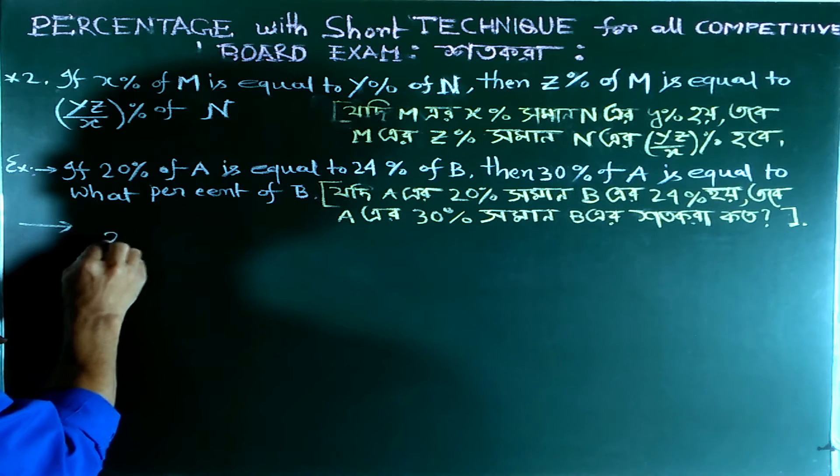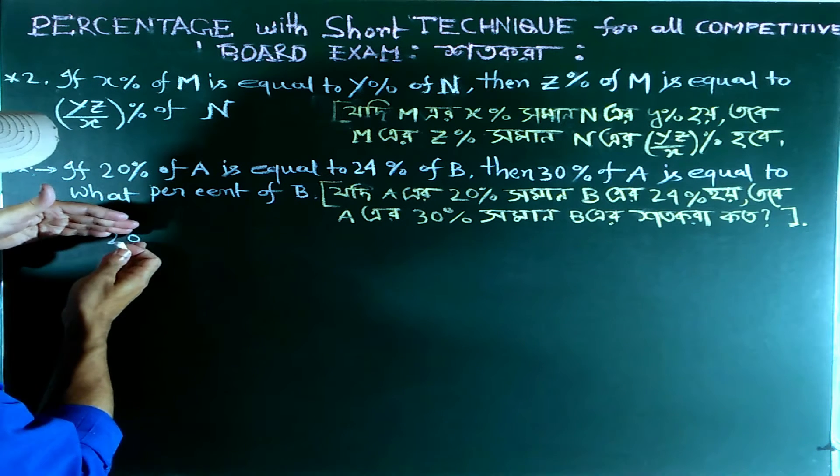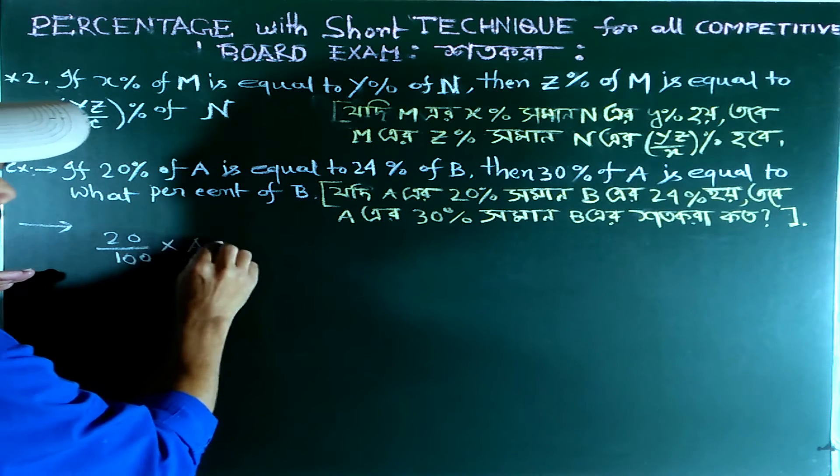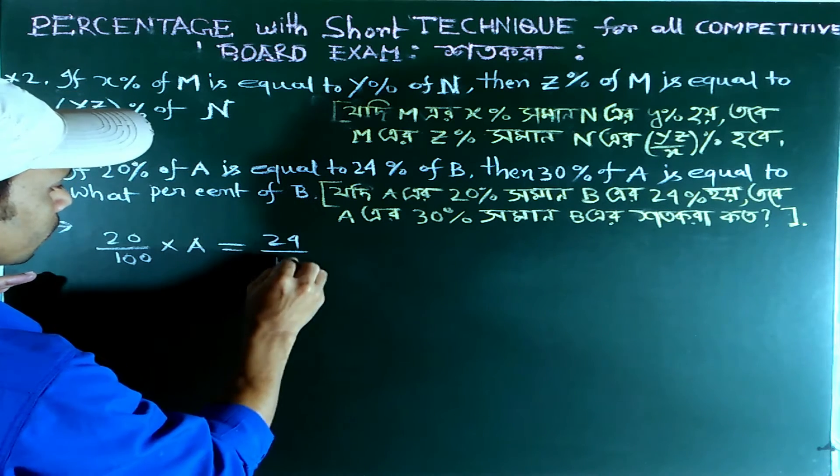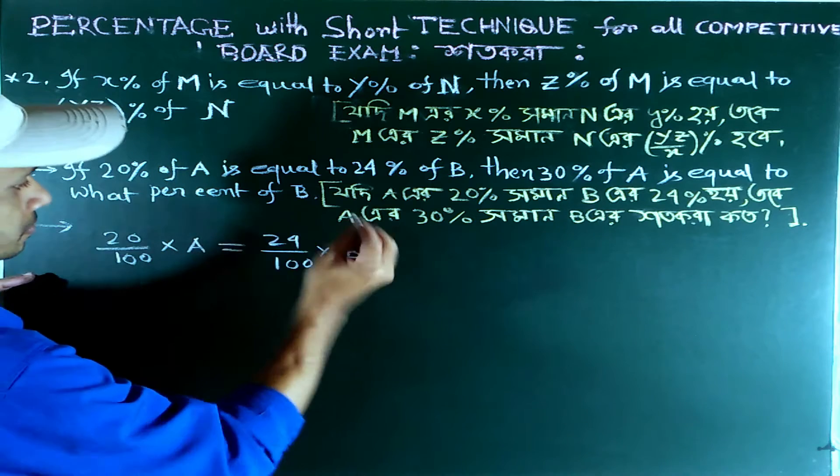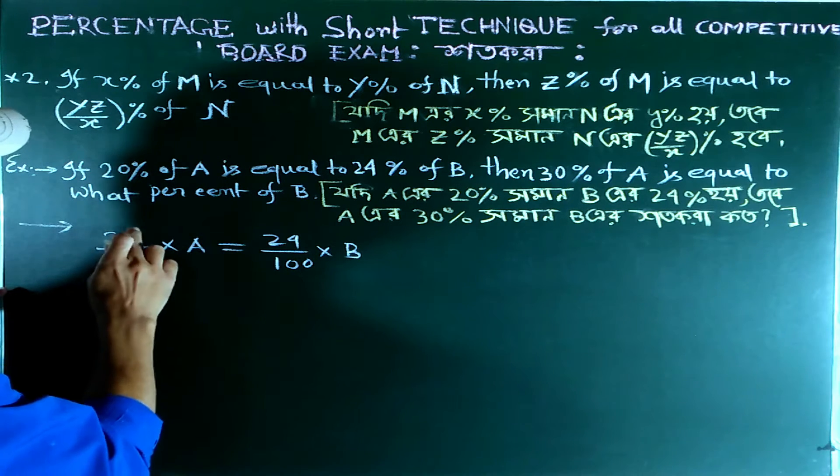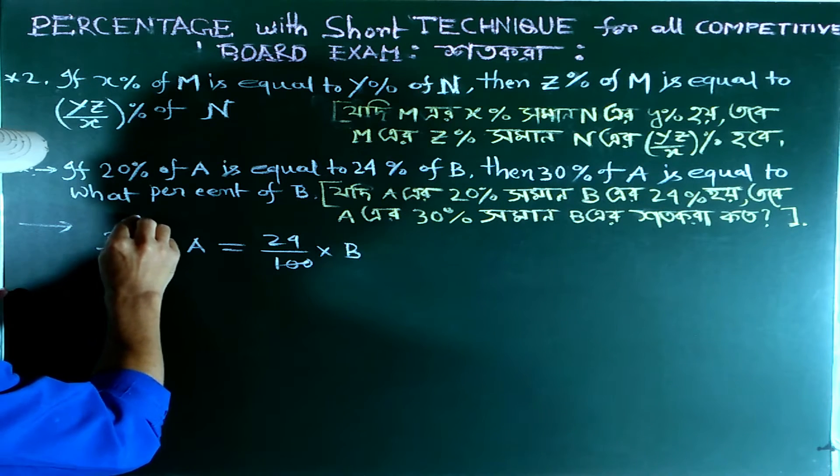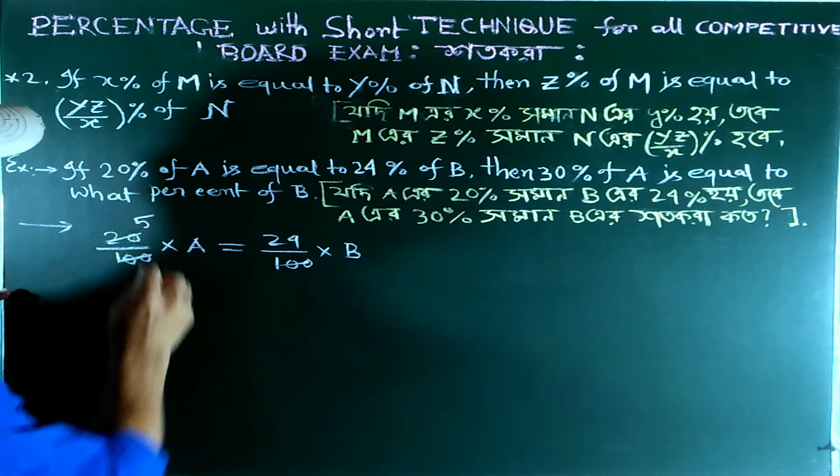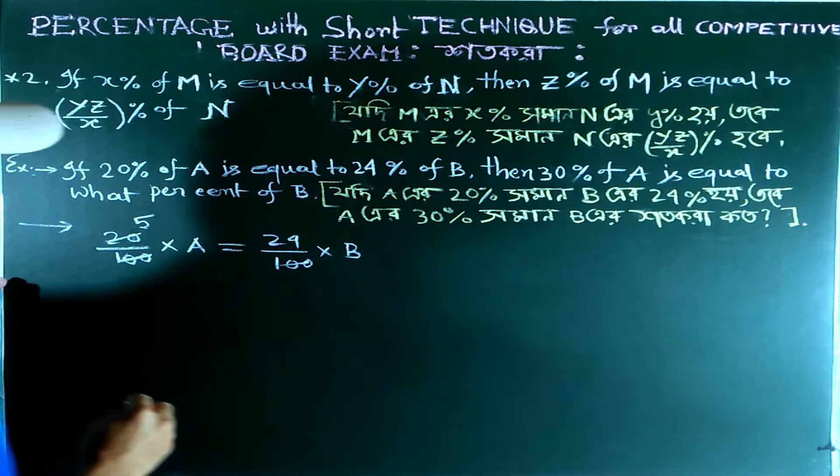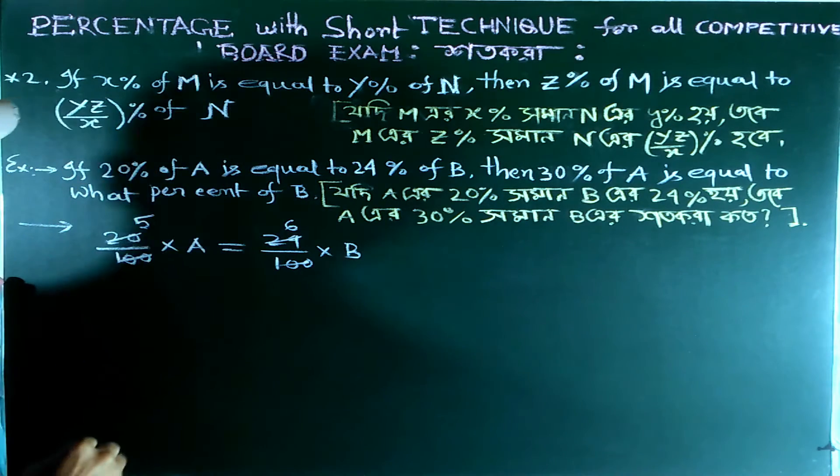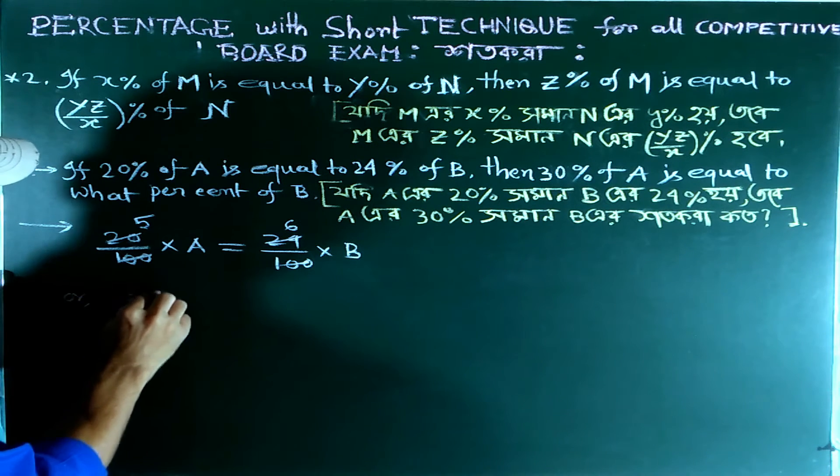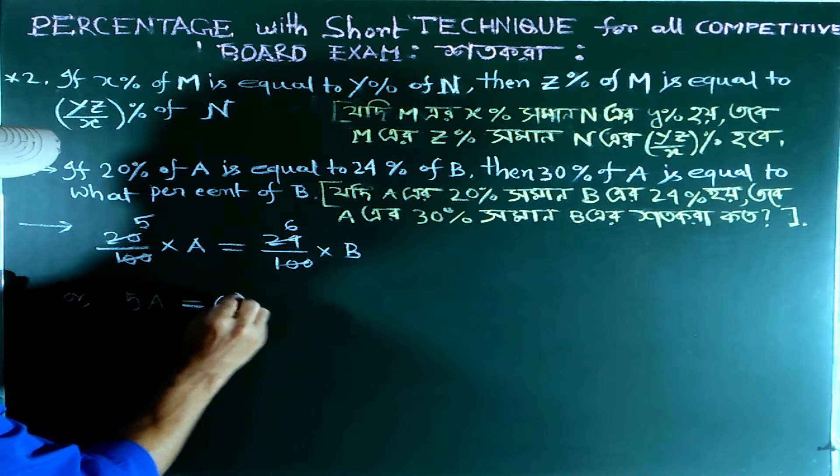Using the general method, 20 percent of A means 20 upon 100 multiplied by A equals to 24 percent, which is 24 upon 100 multiplied by B. After cancellation, we get 4 into 5 equals 4 into 6, or 5A equals to 6B.